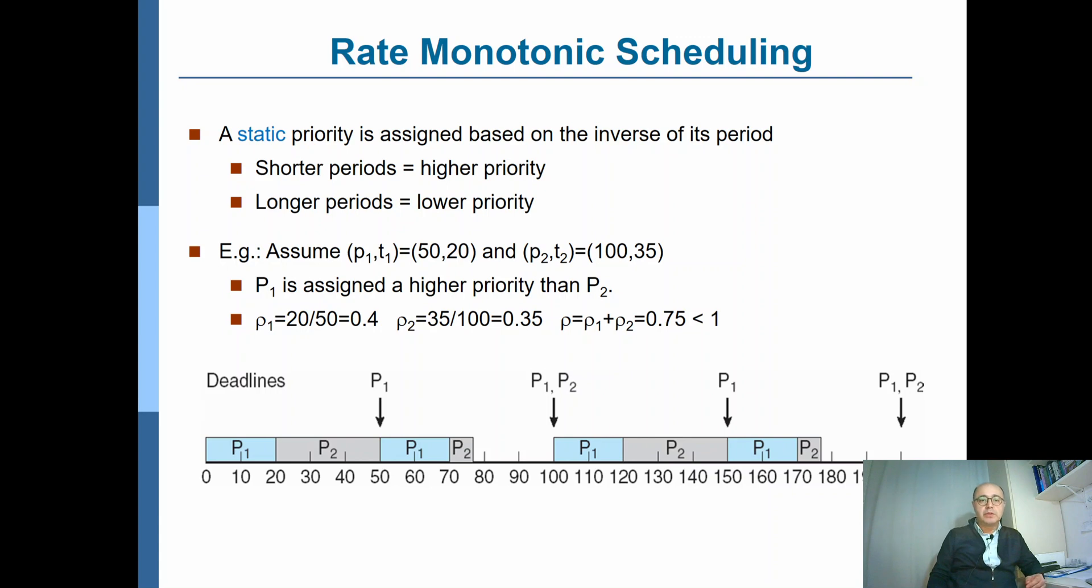Therefore, rate monotonic scheduling arranges the priority of the process as the inverse of its period. In other words, the frequency of the process appearing.